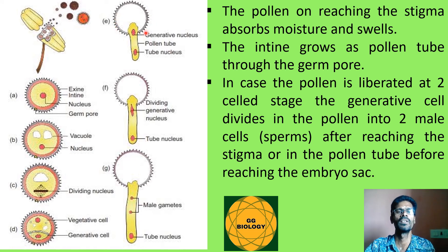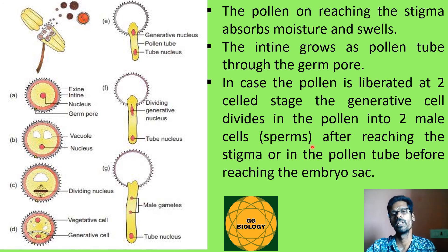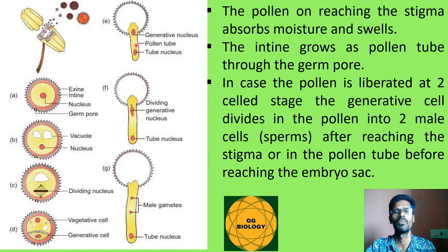When pollen grains reach the surface of the stigma, they absorb moisture and swell. The intine protrudes through the germ pore of the exine to form a tube-like structure called the pollen tube. The generative nucleus divides into two male cells or sperms inside the pollen tube. If pollen was liberated at the two-cell stage, the generative cell divides into two male cells either after reaching the stigma or within the pollen tube before reaching the embryo sac.